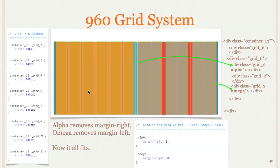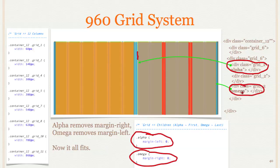So the way to solve that is to use the alpha and omega classes. So really all alpha does when you look at the 960 system is just say margin left of 0. And omega, it says margin right of 0. So on this one here, if I add an alpha class to it in addition to the grid 2, that takes out that extra 10 pixels that I had here, and now it lines up properly. And on the last one, I add the omega one.